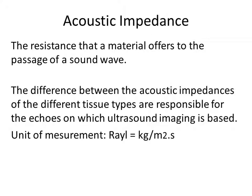Acoustic impedance — in Arabic, المقاومة الصوتية — is the resistance that a material offers to the passage of a sound wave. The differences between the acoustic impedances of different tissue types are responsible for the echoes on which ultrasound imaging is based. Each tissue has its own acoustic impedance, and the difference at the boundary between tissues produces the echo. The unit of measurement of acoustic impedance is Rayl, or kilogram per meter squared per second.